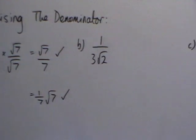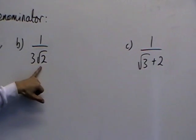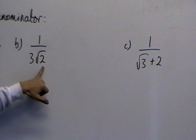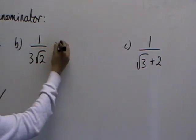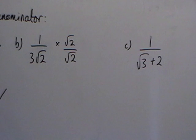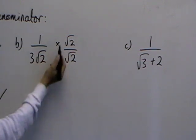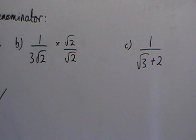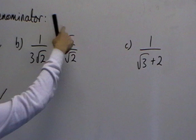Moving on to part b, again we want to rationalize the denominator, so we need to get rid of that root 2. So we're going to multiply the top and the bottom by root 2. If you've done this question by multiplying by 3 root 2, that's perfectly fine, that will also work.